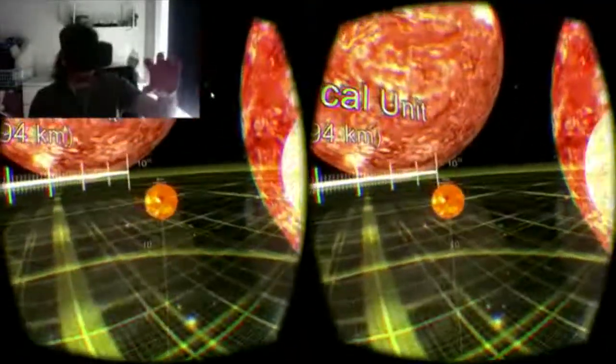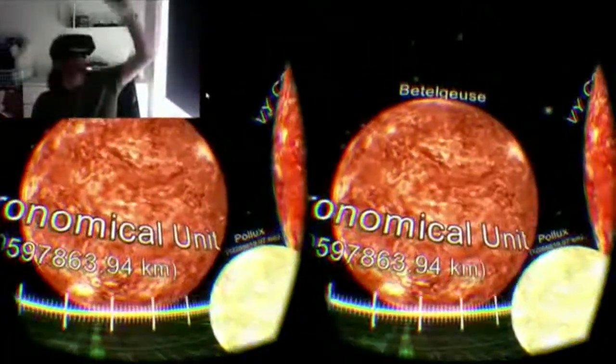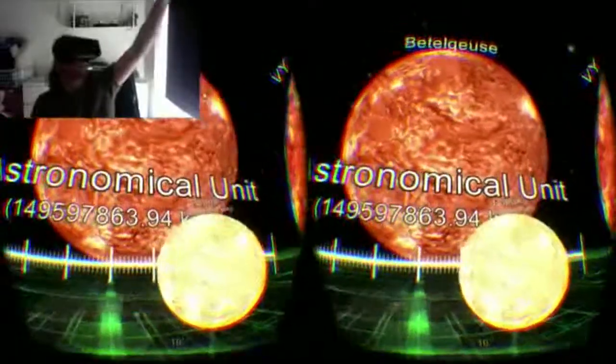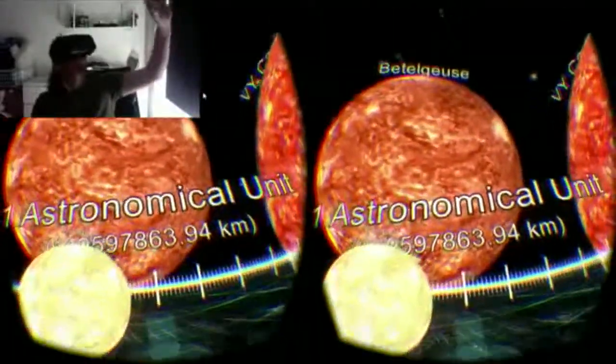Okay, so our star is like this, the sun, right? This big. And Betelgeuse is like huge compared to that, on the same scale. I think that's just cool.